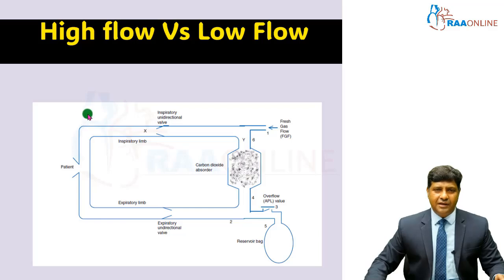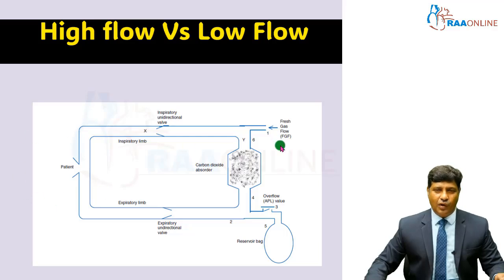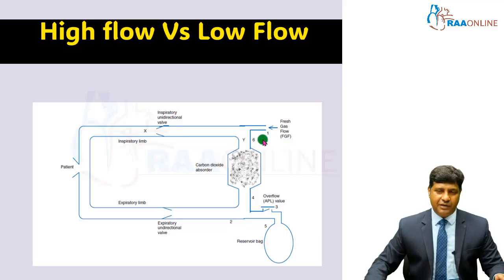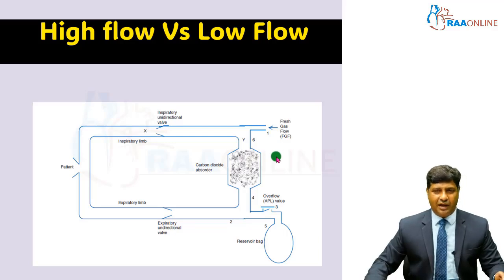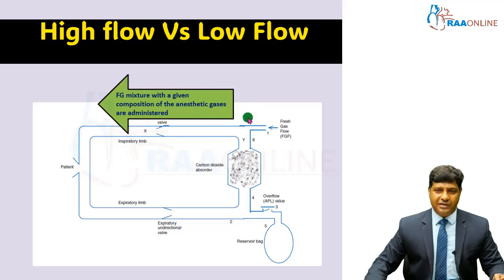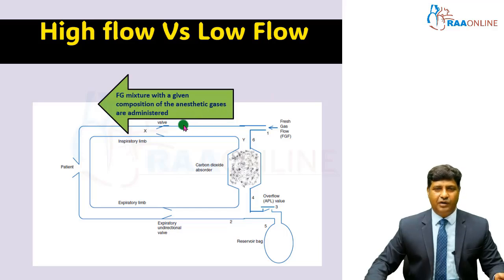This is the basic schematic representation of our circle absorber. We will see what happens during high flow — that is when the fresh gas flow is equivalent to or more than the minute volume — and what happens when we reduce the minute volume. Traditionally, we used to administer fresh gas flow which is equivalent to or just more than the minute volume.